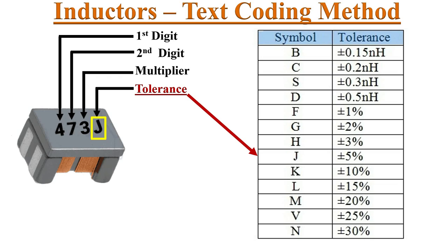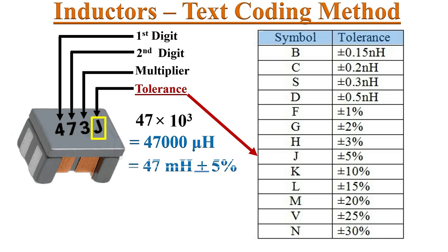You can use this table as a reference. Here 473J gives a value of 47 milli-Henrys of inductance, and J indicates a tolerance of plus or minus 5%.